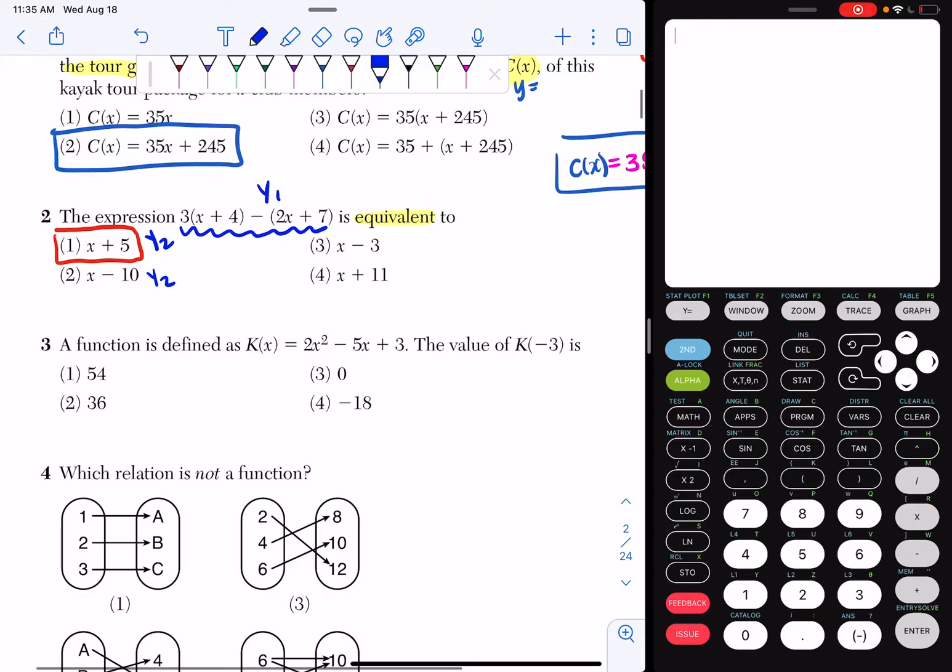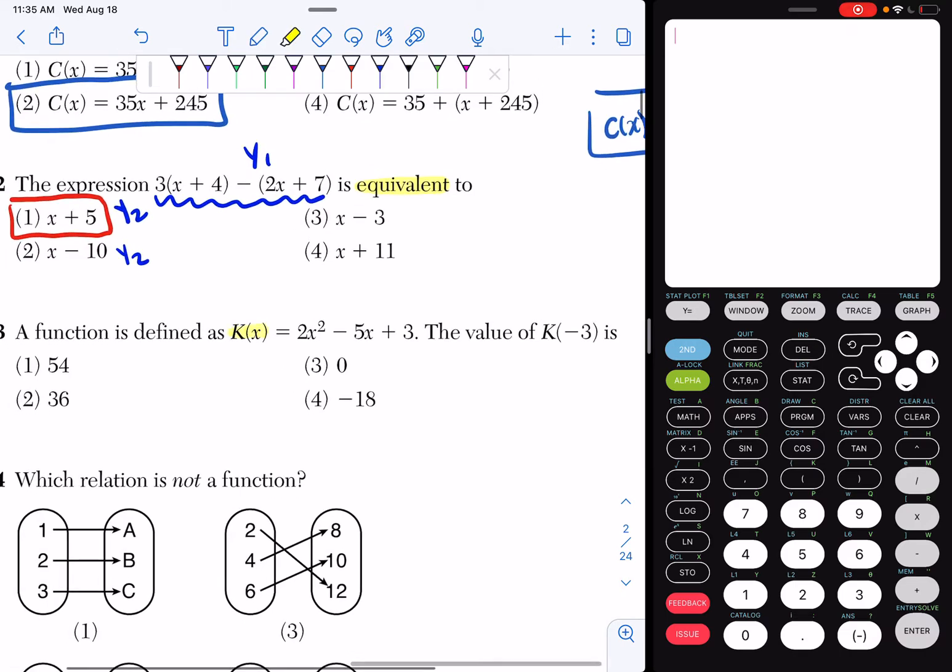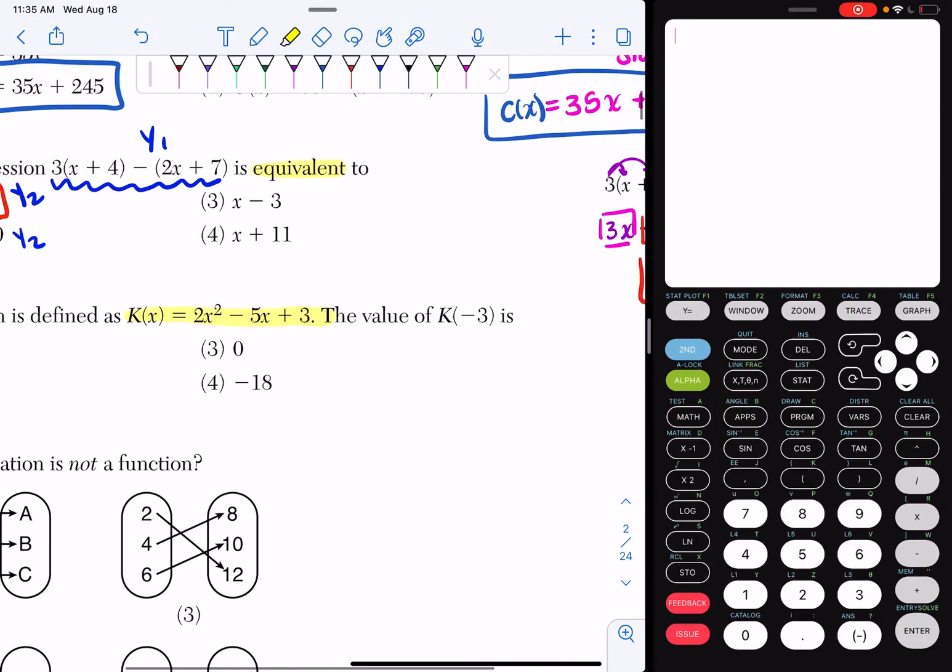So two ways to approach, both rely on the calculator. The first thing I'm going to do is I'm going to highlight K of x equals 2x squared minus 5x plus 3 and K of negative 3.